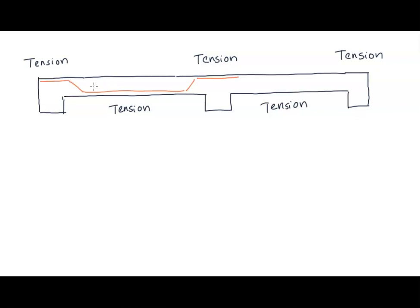So what we see is that there is tension reinforcement at the bottom in the span, and similarly the reinforcement comes at the top near the support because there is tension created there. This is the first reason why the bent up bars are provided — because after a certain point the tension gets transferred to the upper part of the slab, and hence by bending this reinforcement, sufficient reinforcement is available to resist the negative bending moment.